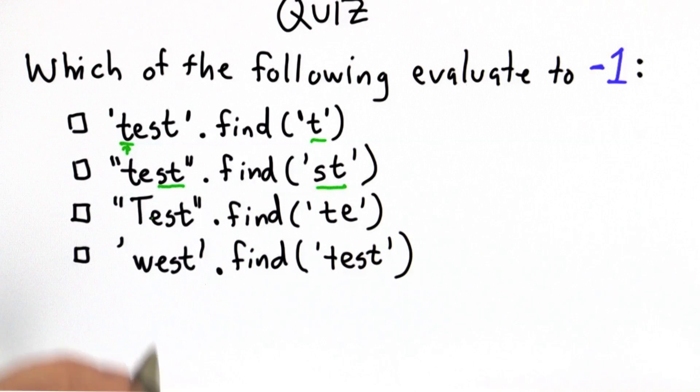For this one, we used an uppercase t, a lowercase here. The find has to match exactly. It has to be exactly the same character, and case matters. So this would return negative 1 and would be correct that this is one of the examples that returns negative 1.